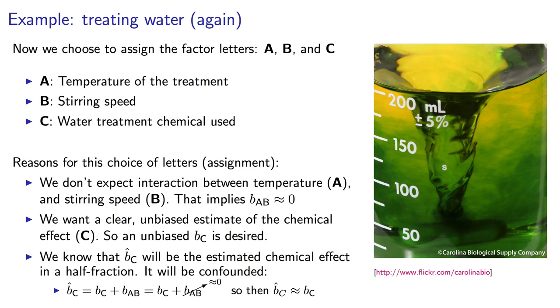So if I would like this good estimate of the chemical added factor, by that I mean I don't want it to be confounded with other large effects, a natural choice is to alias the interaction between any other two-factor interaction, temperature and stirring speed in this case, with the chemical effect.